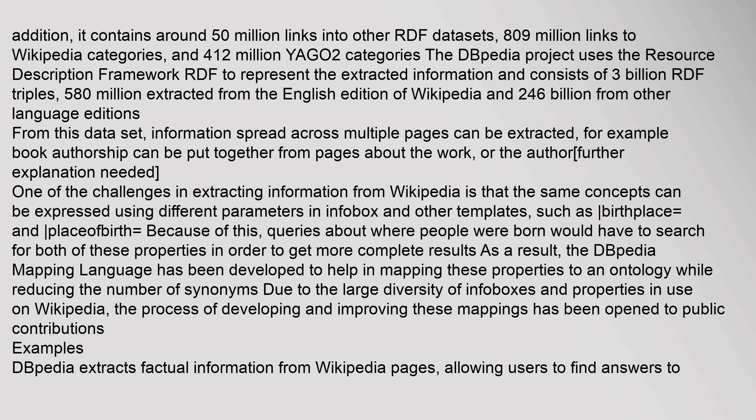Information spread across multiple pages can be extracted; for example, book authorship can be put together from pages about the work or the author. One of the challenges in extracting information from Wikipedia is that the same concepts can be expressed using different parameters in Infobox and other templates, such as 'birthplace equals' and 'placeofbirth equals'. Because of this, queries about where people were born would have to search for both properties to get more complete results. As a result, the DBpedia mapping language has been developed to help map these properties to an ontology, while reducing the number of synonyms due to the large diversity of infoboxes and properties in use on Wikipedia.